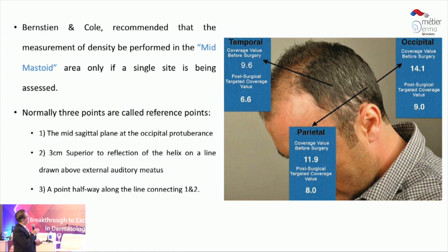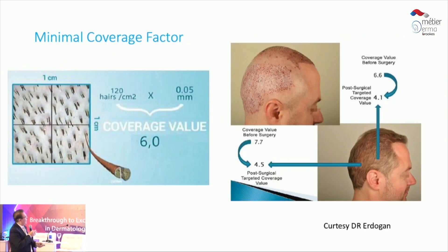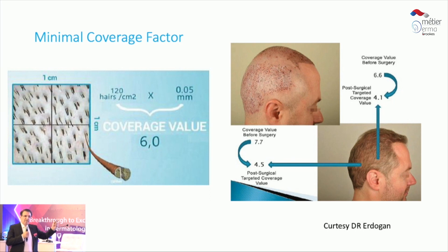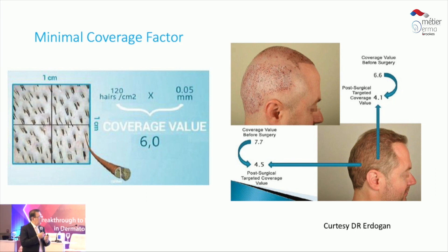When we assess, we need to evaluate three areas: the temporal, occipital, and parietal. We want to determine the minimum coverage, which is the number of hairs per square centimeter multiplied by the diameter in millimeters. You need a minimum coverage value of six — if you have that, your results will be very decent.